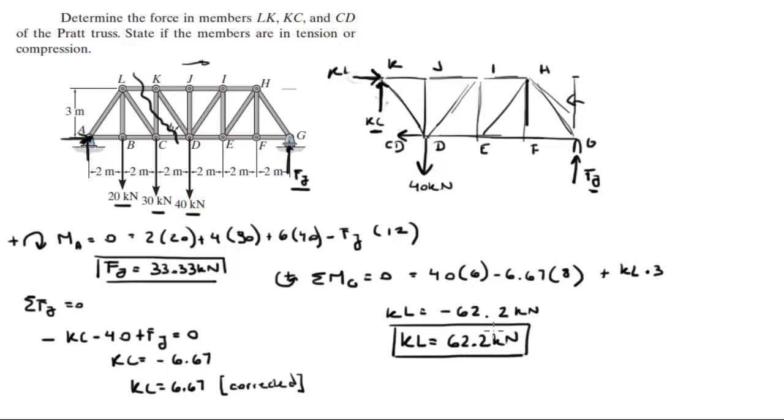And it's 62.2 going to the right. And now, what you can do is, you can find Cd very, very easily. By doing this, sum of the forces in the x are equal to 0. So, you get that Kl minus Cd is equal to 0. So, if Kl is 62.2, then Cd is also equal to 62.2. So, Cd is equal to 62.2 kN.